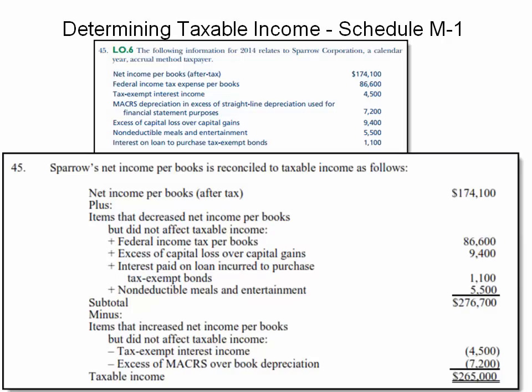I've realigned the screen so that we still have the base information here although it's a lot smaller. Here's how we would tackle this one. We start off with net income per books — that was $174,100. Then we have to add in items that would decrease net income per the books but do not affect taxable income. The federal income tax expense per books would be the first item we would list.